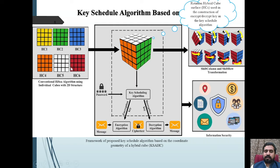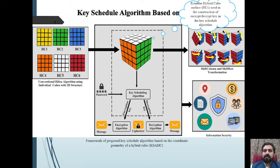An important question in the design of the rotation of the hybrid cube is: if the key scheduling algorithm was previously designed for the HICE algorithm, why do we need a new key scheduling algorithm based on the hybrid cube? Previously, hybrid cube surfaces were used with a two-dimensional structure, but in the new development, the algorithm uses rotation of the cubic structure using three-dimensional features. The shifting and mixing of rows and columns of the hybrid cube produce a resultant matrix that must be invertible, and invertible matrices are used in the development of encryption and decryption keys for block ciphers.